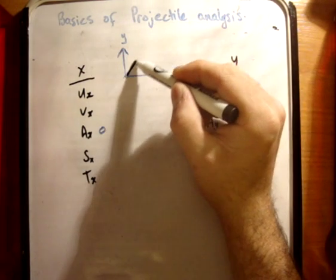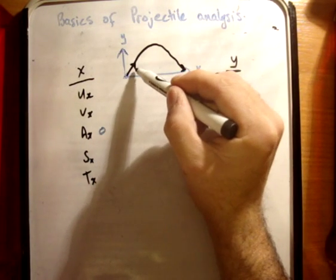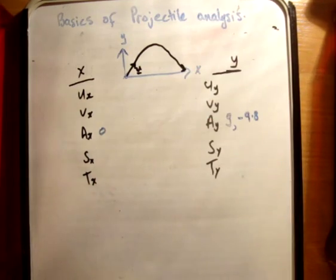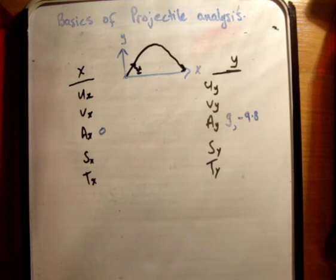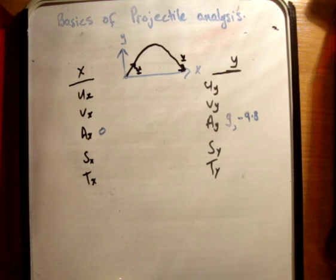It's customary to draw the initial speed vector like that, and sometimes you draw the final speed vector like this. And that's generally how you draw your diagrams.